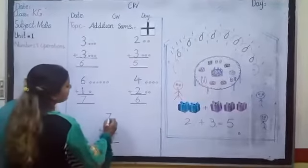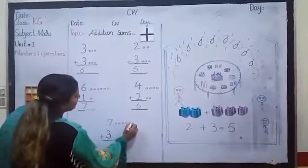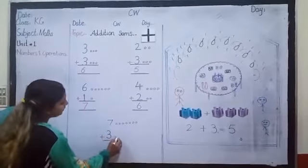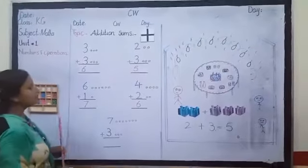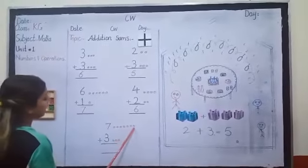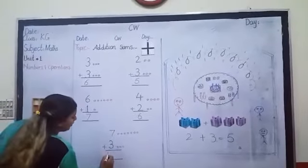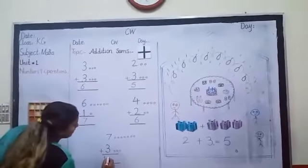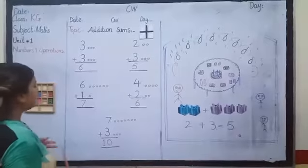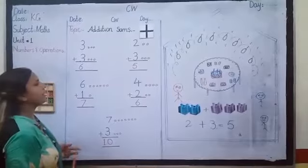Okay, now look at the next sum. This is number seven. I am drawing seven circles here — these are seven circles. And this is number three, so we have to draw three circles. Now let's count the total: one, two, three, four, five, six, seven, eight, nine, ten. The new figure we got — adding three to seven — is ten. If we add three in seven, the answer is ten.